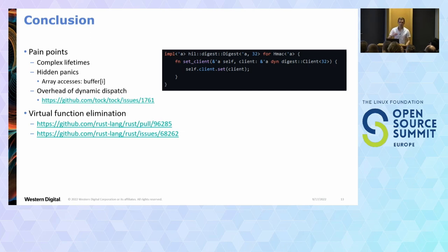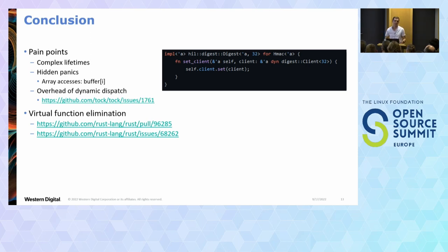From the audience: there might be RFC work on recoverable panics. The speaker noted that in embedded some things are truly unrecoverable — like a bus fault, where you just have to give up and maybe reboot. It would be nice to be able to turn certain panic checks on and off, like Zig's debug mode. The audience confirmed there is active work in Rust for that.